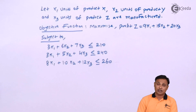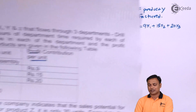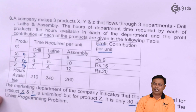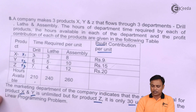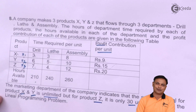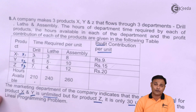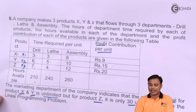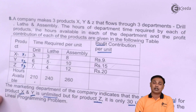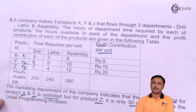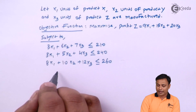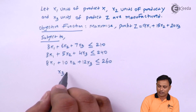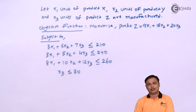Now we will put the demand constraint. As already discussed in the problem, there is no demand constraint for products X and Y — you can sell as much quantity as you want, the sales potential is unlimited. But for product Z, the marketing department indicates you can sell only 30 units. That means my assumption x3 cannot be more than 30, so it will be x3 ≤ 30. This is my demand constraint.